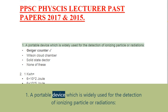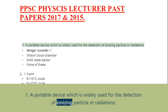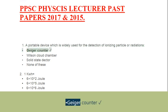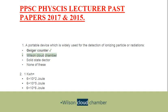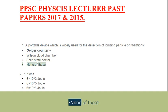Question 1: A portable device which is widely used for the detection of ionizing particle irradiations. Options: A. Geiger counter, B. Wilson cloud chamber, C. Solid state detector, D. None of these.